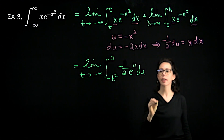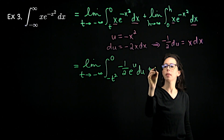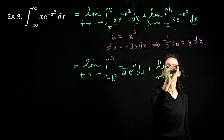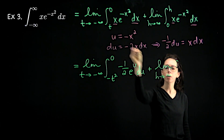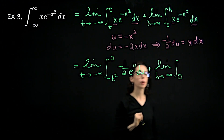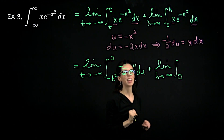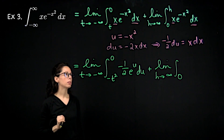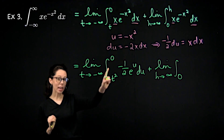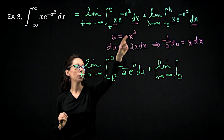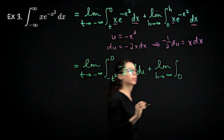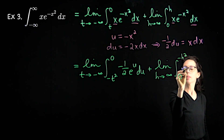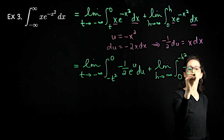Very similarly for the second piece: the limit as h goes to infinity. When x is zero, u is zero — that's our lower bound. When x is h, u is negative h squared — that's the upper bound. So the second integral becomes the limit as h goes to infinity of the integral from zero to negative h squared of negative one-half e to the u du.